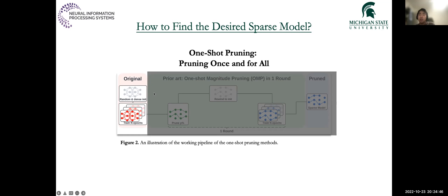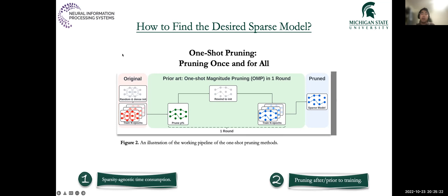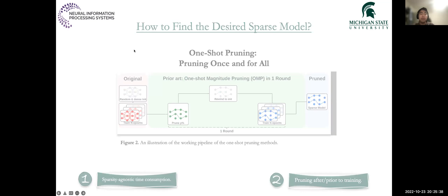To mitigate the high computational cost of IMP, researchers also propose some one-shot pruning methods. Namely, the model is pruned to the target sparsity level only one time, based on a pre-trained model or models with some random initializations. The former is often called one-shot magnitude pruning, or OMP, and the latter is termed initialization-based pruning. The model just goes through one pruning operation, and then the sparse model with the desired sparsity level is delivered. The advantage lies in its sparsity-agnostic time consumption.